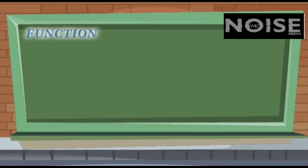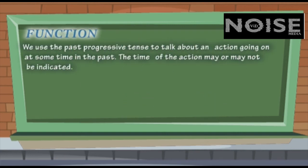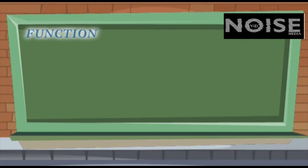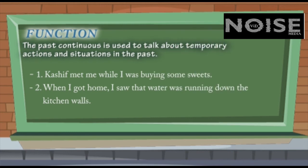Now, coming to the function, why we use this tense. We use a past continuous tense to talk about an action going on at some time in the past. The time of the action may or may not be indicated. For example, We were listening to the radio all evening. It was getting darker. The children were having fun all the day. The birds were flying all around yesterday. We use past continuous to talk about temporary actions and situations in the past. Kashif met me while I was buying some sweets. When I got home, I saw that water was running down the kitchen walls.